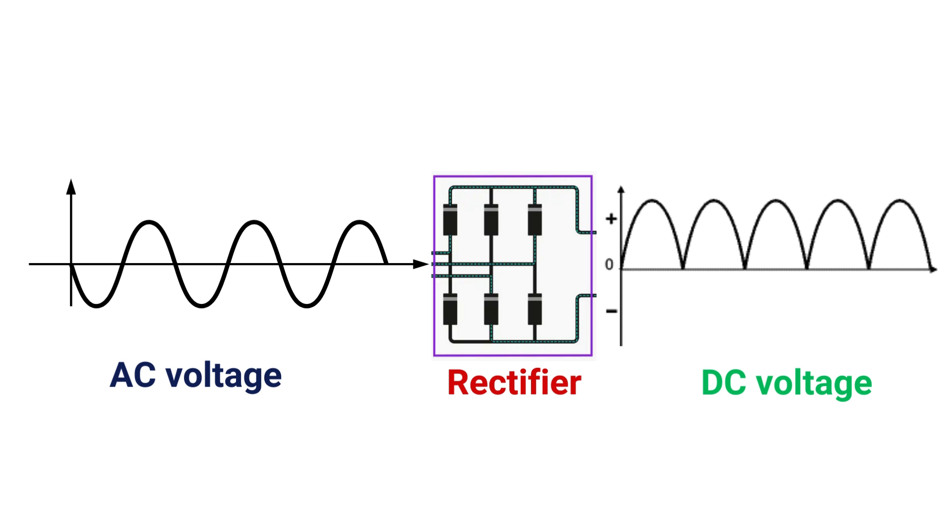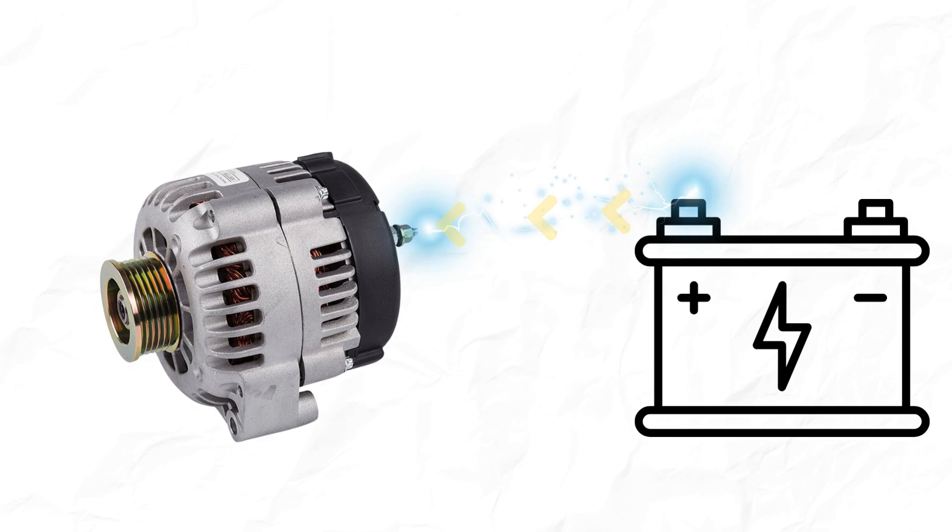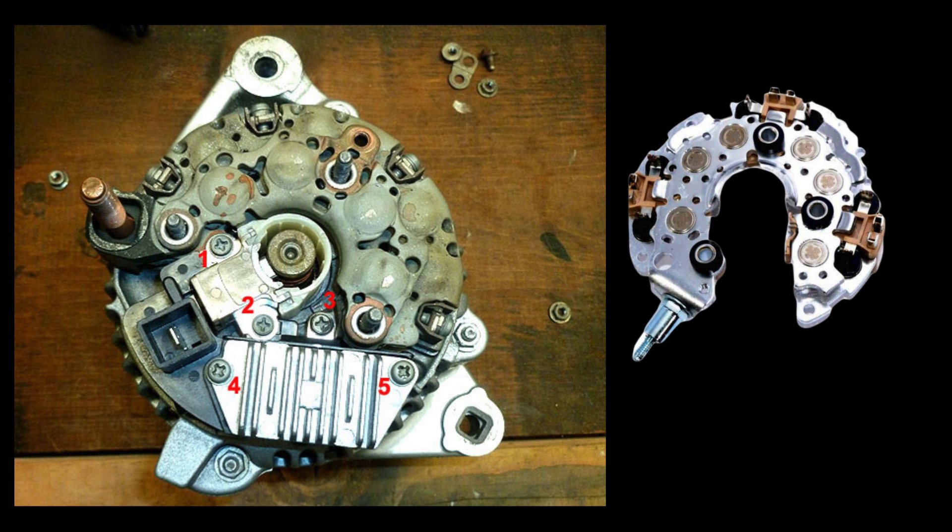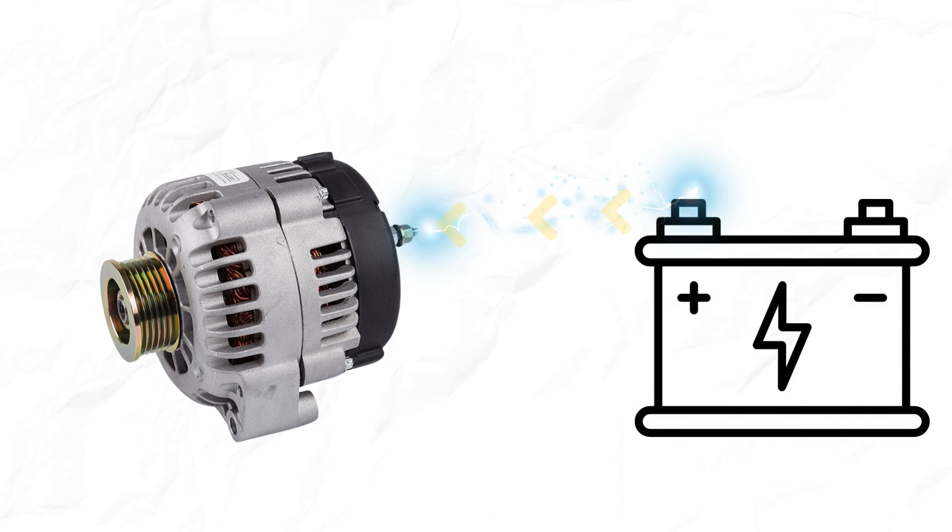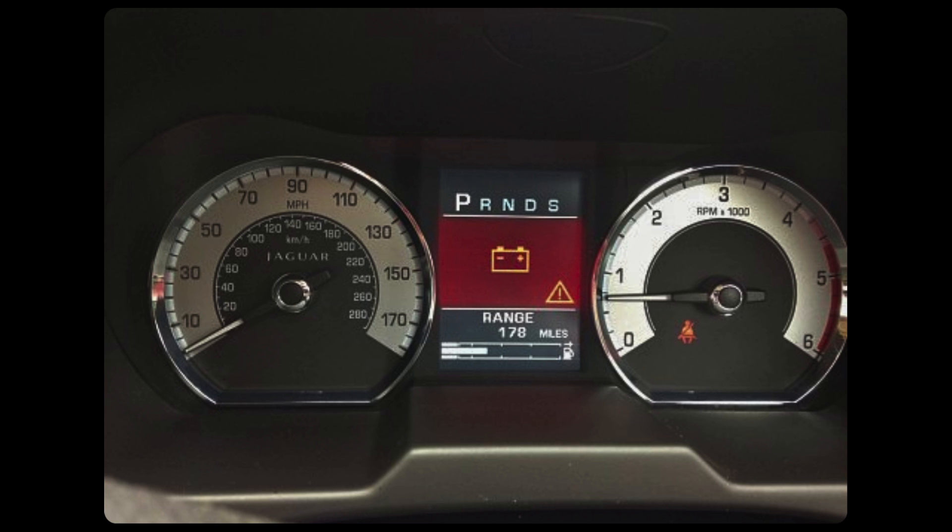Number 4: Bad Diode of Alternator. The diode in the alternator converts AC current to DC current. It also prevents reverse current flow from battery to alternator. If the diode is bad, the battery will start draining when the engine is off as current will be flowing in reverse direction from battery to B terminal of alternator. As a result, the battery warning light will turn on.